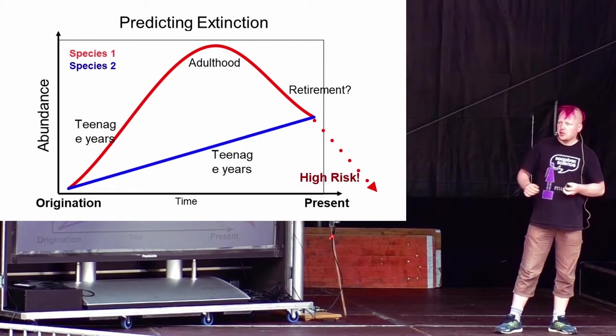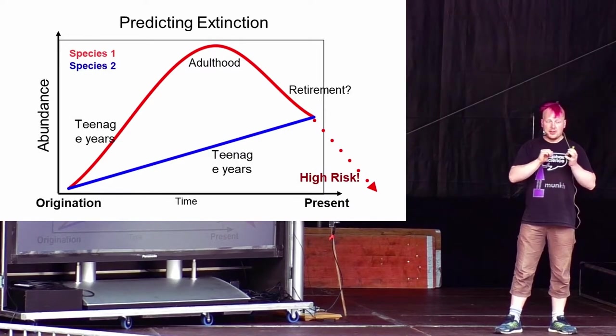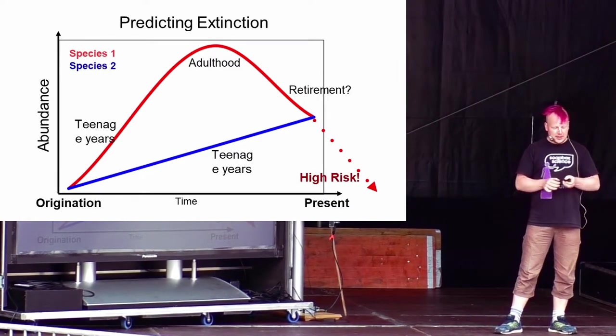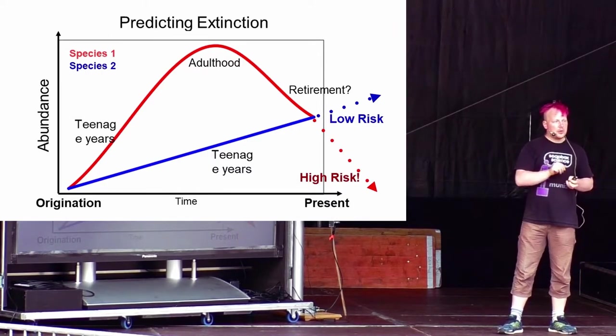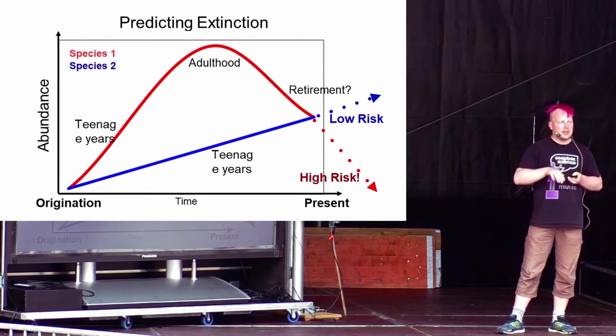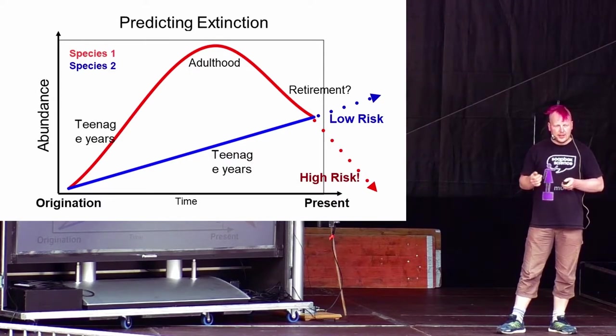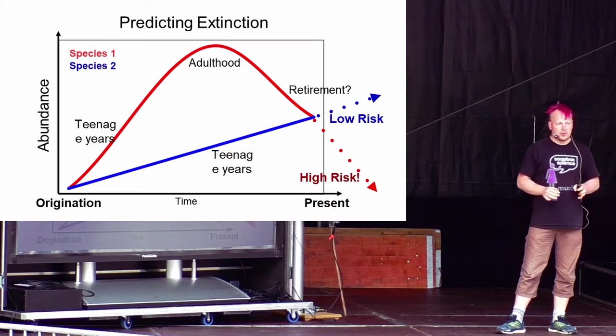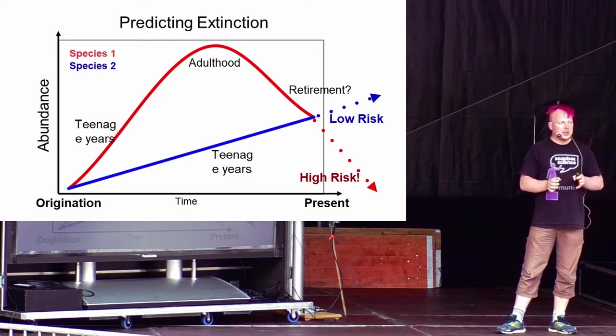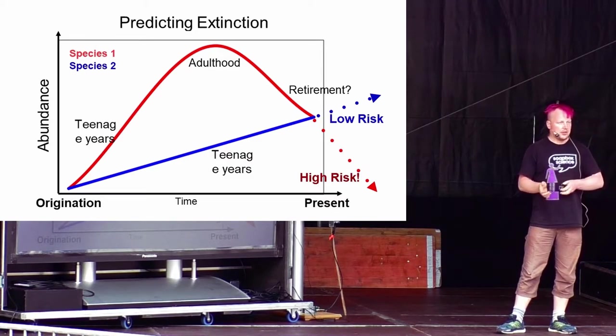Here, the blue species is constantly increasing, so there is no sign of adulthood, still in its teenage years. If we make a projection into the future, we assume it will still constantly increase, so this species has a low extinction risk. This is a pretty straightforward approach. You can do this for every species for which we have fossils and that are still around.